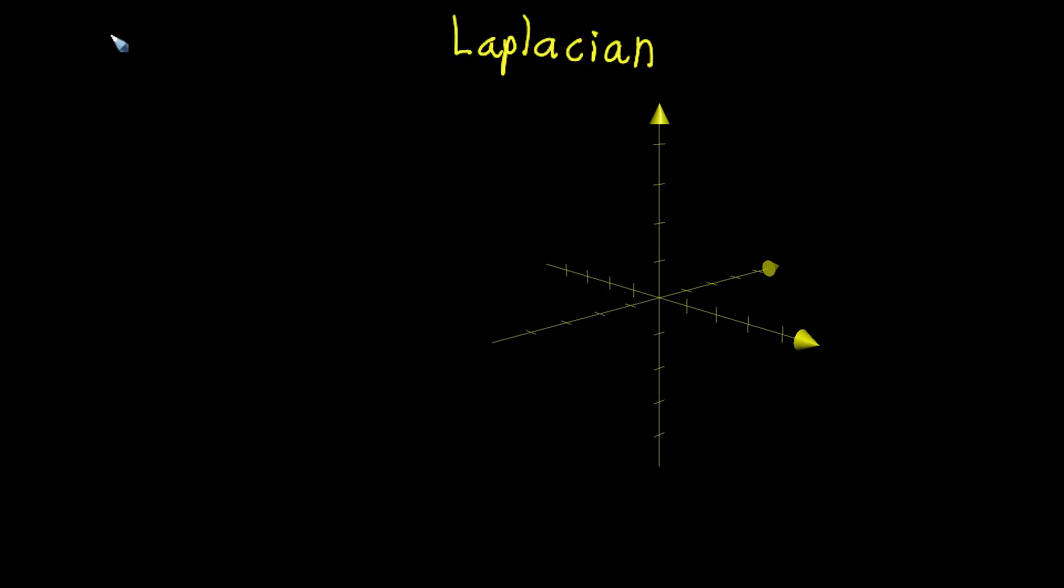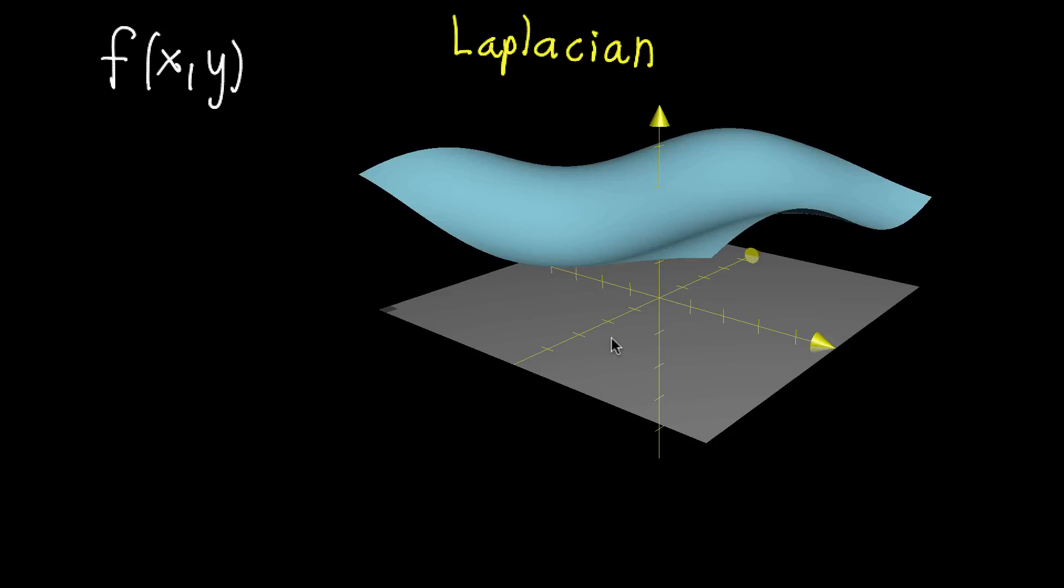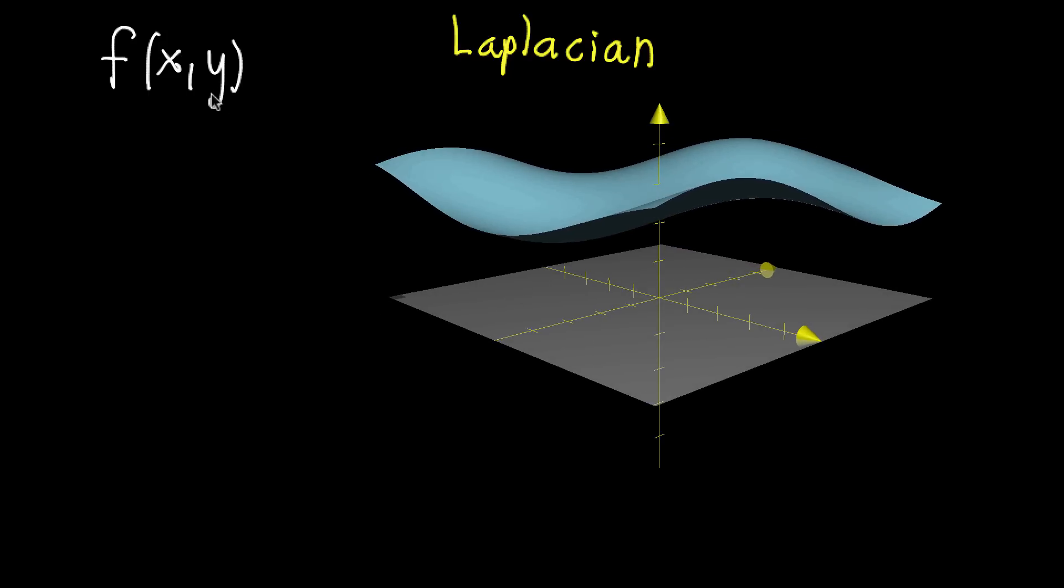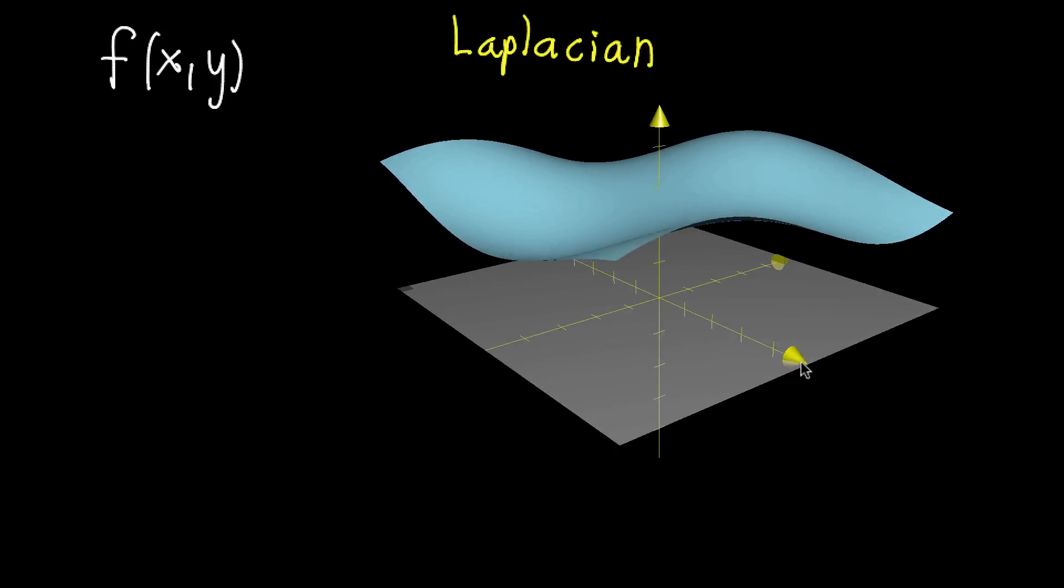So in this case, let's say we have a multivariable function like f that just takes in a two-dimensional input, f of xy. So you might imagine its graph as being something like this, where the input space is this xy plane here, so each of the points xy is a point here, and then the output is just given by the height of that graph.